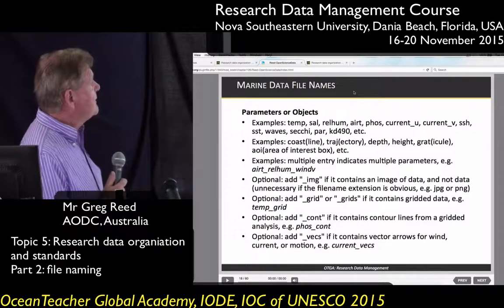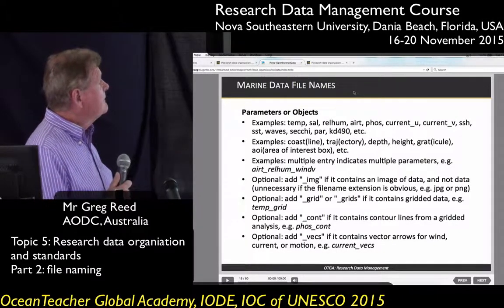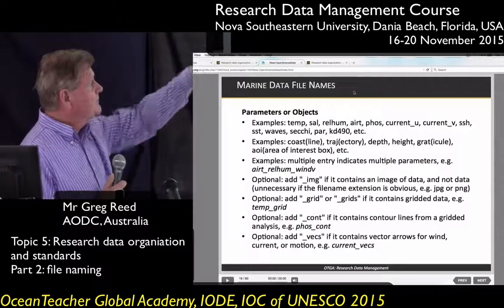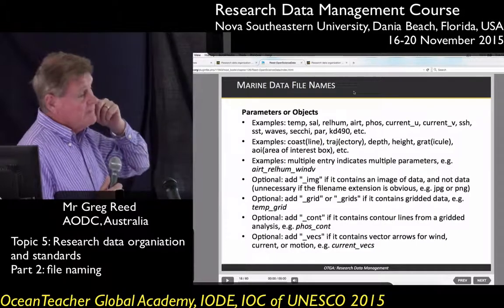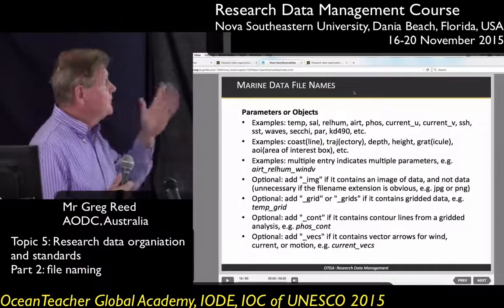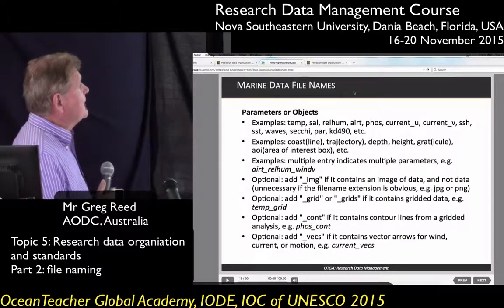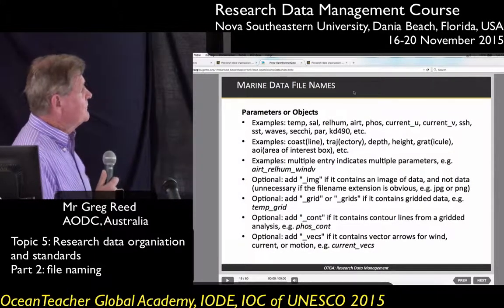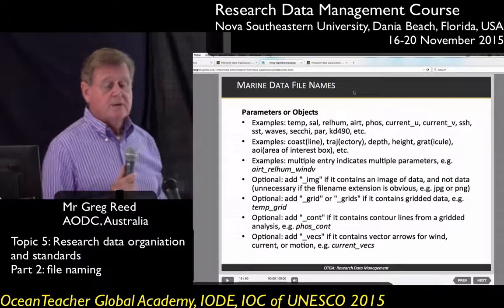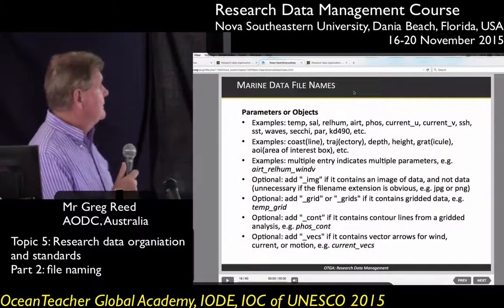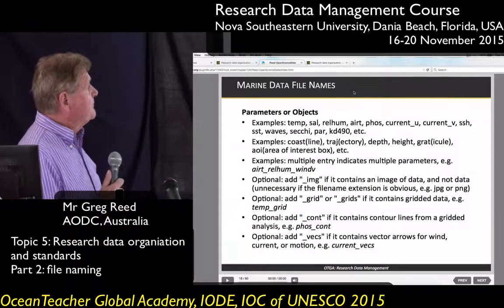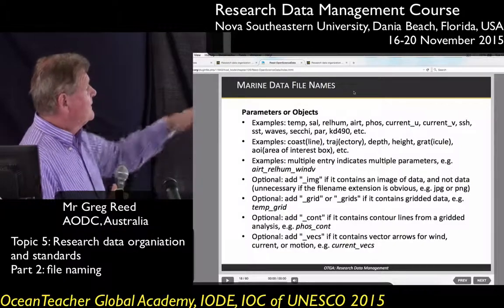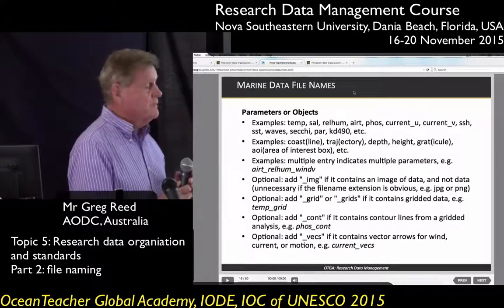If it's an image file you might want to add the word IMG so people know what it is, but if it's a JPEG or PNG that may not be necessary because people will already know it's an image file. You can add 'grid' if it's gridded data — for example, temperature grid would be 'temp_grid'. If it's contours, put that in there. If it's vectors you can also add that, so you'd have something like 'current_vectors'.